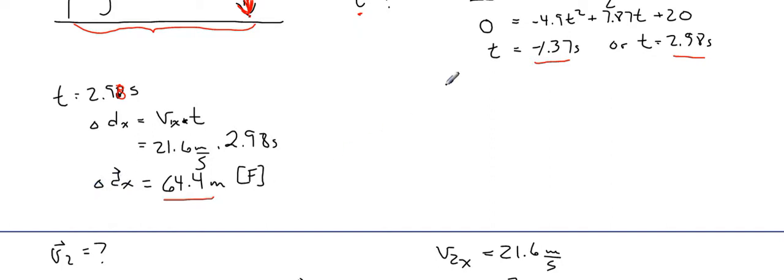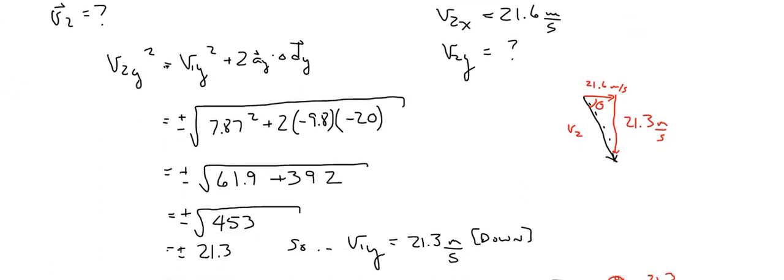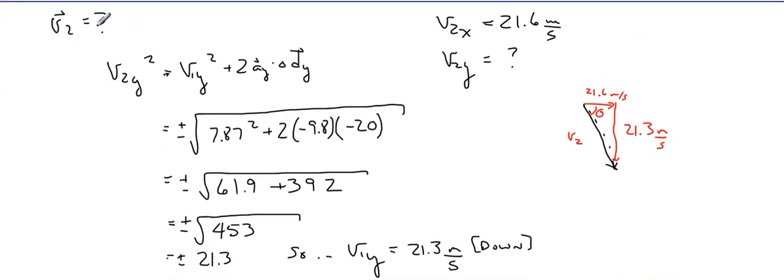So we've solved for delta dx and we've solved for time and now we're going to see if we can solve for V2. V2 we can solve by using this equation V2y squared equals V1y squared plus 2ad when both of those are in the y components. If I take the square root of everything here, I have that 7.87 squared plus 2 times negative 9.8 times negative 20, which is our displacement in the y, will give us in the end 21.3 meters per second. So V2y is equal to 21.3 meters per second down.